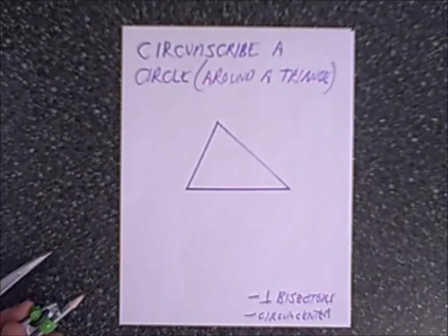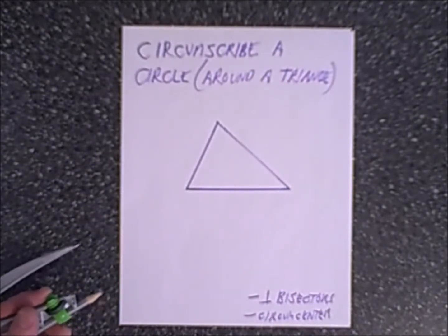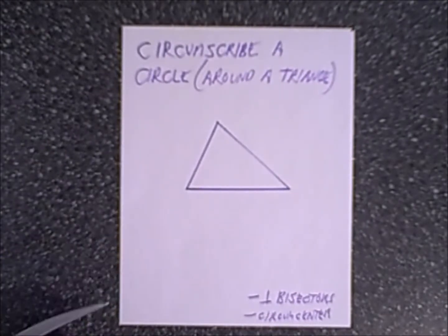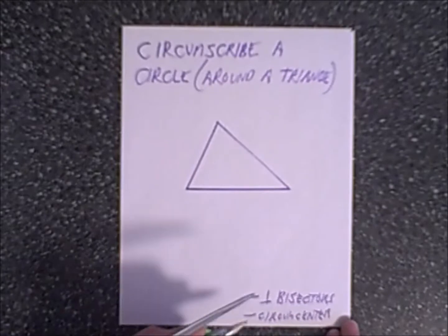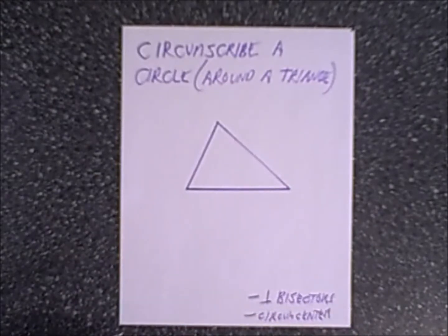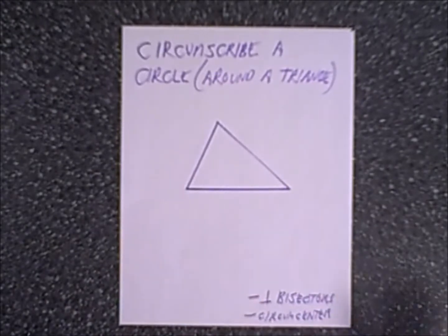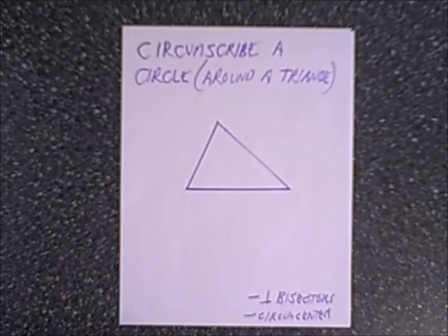The most significant theorem is understanding how triangles work in terms of medians, altitudes, angle bisectors, and perpendicular bisectors. What you might remember is that if you take all three of the perpendicular bisectors, they will intersect — they're concurrent — at a point inside the triangle, which is the circumcenter.